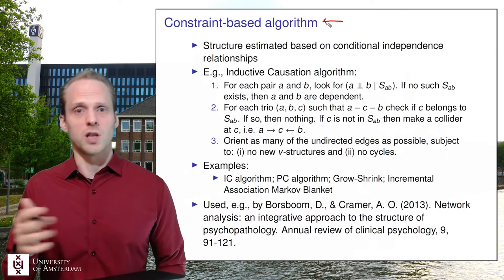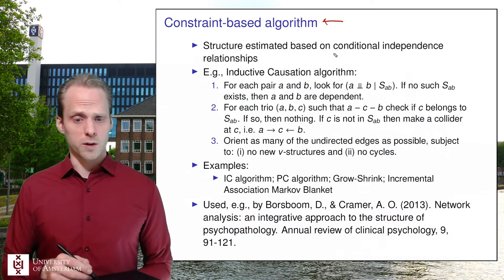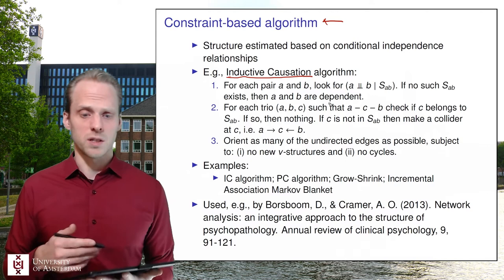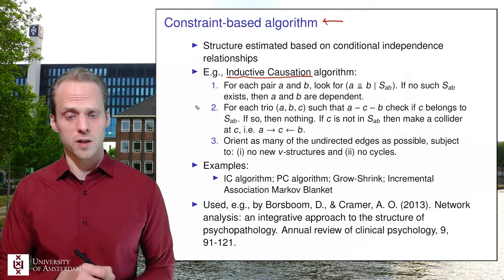At lower sample sizes, constraint-based algorithms are more prone to errors — you might not have enough power or other data problems, since you're performing many small tests. Most algorithms in this class are based on the older inductive causation (IC) algorithm; many newer ones are simply faster versions of it, which is slow but insightful and relatively easy to understand.